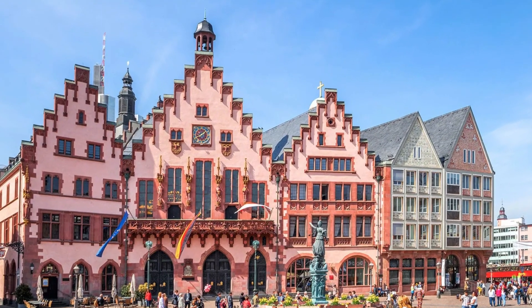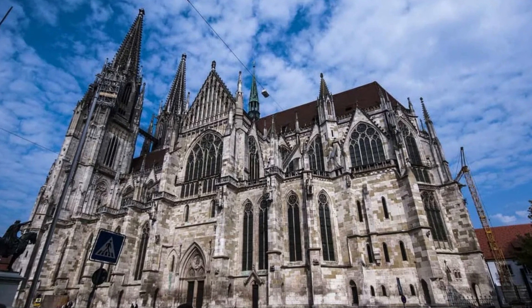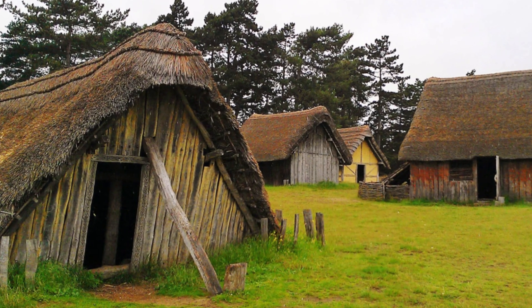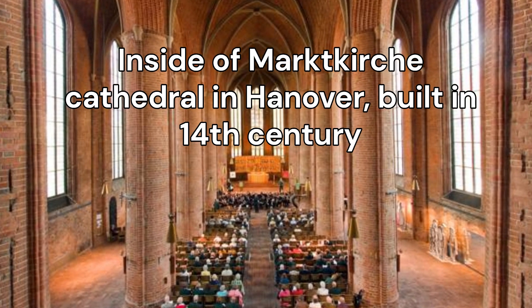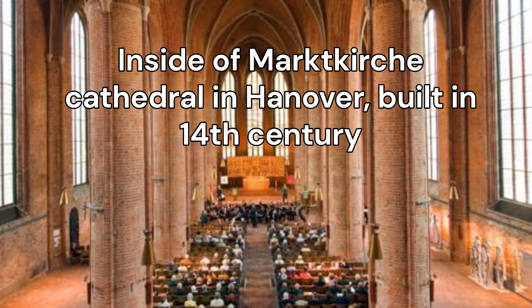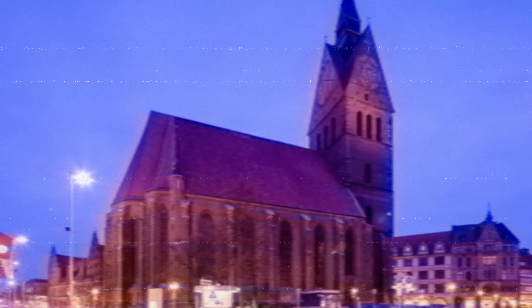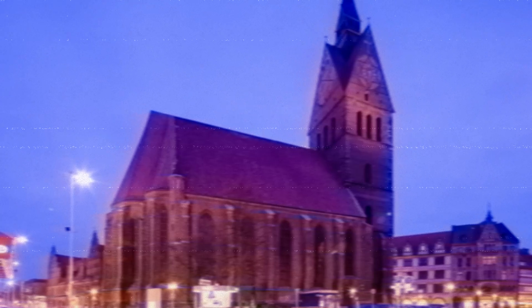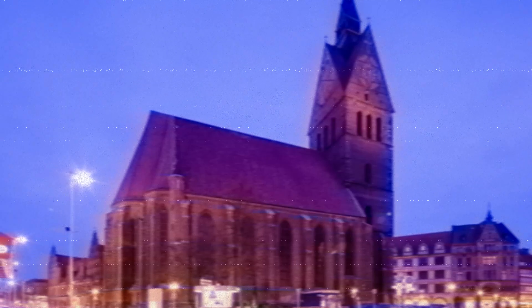Medieval German architecture varied by region but was deeply influenced by Romanesque and later Gothic styles. Early Saxon buildings were often wooden and utilitarian, reflecting the needs of agrarian communities. Over time, as wealth increased, more durable stone structures such as castles, cathedrals, and town halls began to appear. Hanover itself saw the construction of several prominent structures, including churches and fortifications, which served as symbols of both religious devotion and political power.